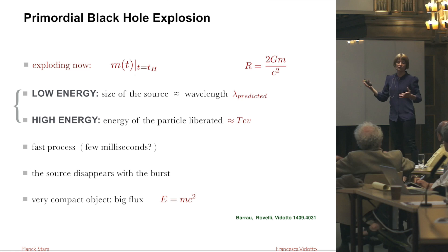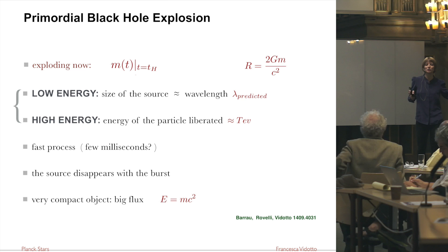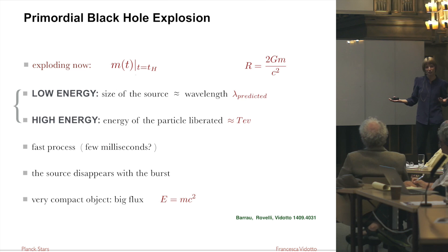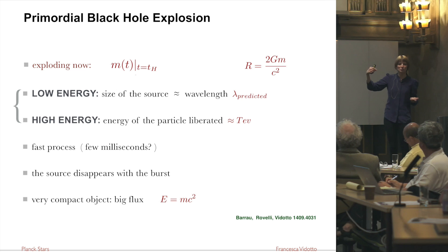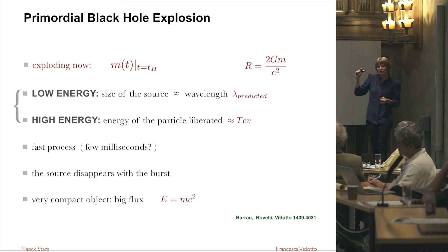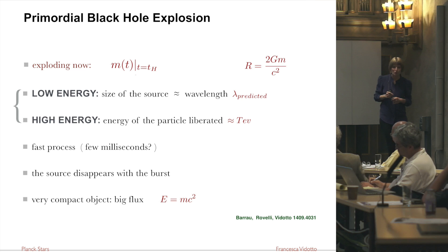From the point of view of an astrophysicist trying to distinguish these objects from others: if you see the same signal being repeated, this is not the kind of object I am describing. There is a possibility of repetition due to gravitational lensing, but that is another story and will enter the discussion later.